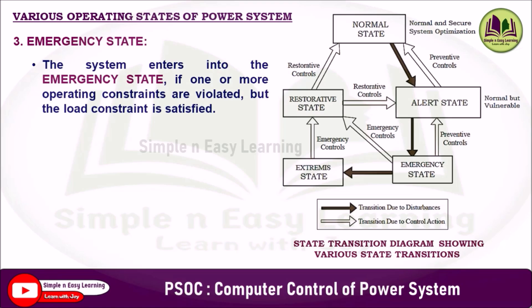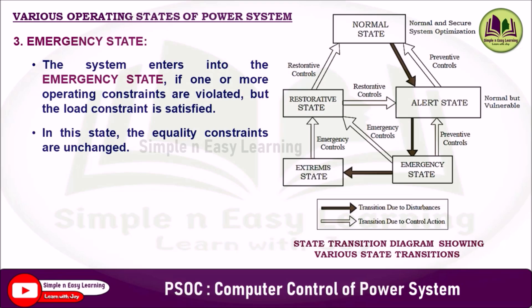The system enters the emergency state if one or more operating constraints are violated but the load constraint remains satisfied. Operating constraints include voltage constraints, thermal limits, frequency limits, generator operating limits, stability constraints, and reserve requirements. Load constraints include load-demand balance, load shedding constraints, demand response participation, load forecast accuracy, frequency, and geographical load constraints. In this state, the equality constraint (generation equal to demand plus losses) also remains unchanged.